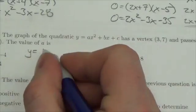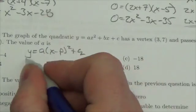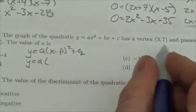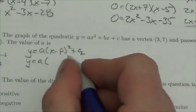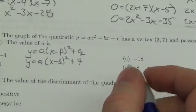We're going to start by plugging this into vertex form, so we start with a times... well, the vertex is (3,7), so this is going to end up being x minus 3 squared plus 7.